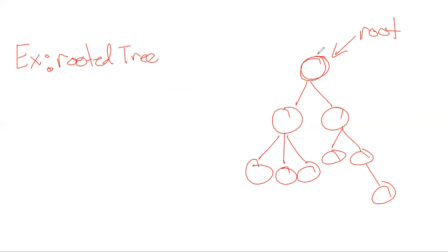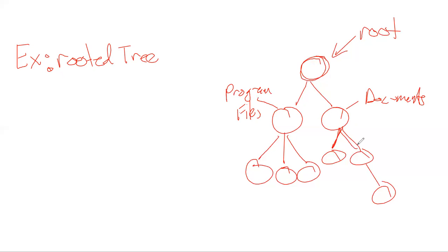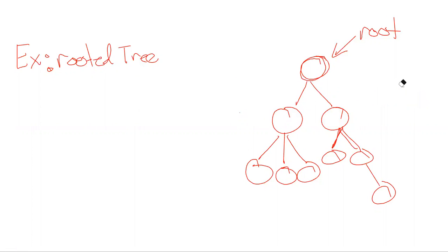Under the root directory, you might have directories such as Program Files, Documents, and so on. A file hierarchy is a good example of a tree. Nowadays, file hierarchies allow you to insert links, so you can produce a cycle or loop — technically making it more a graph. But in its purest sense, a file hierarchy is a tree. Let's come back from that example and introduce the nomenclature for a rooted tree.